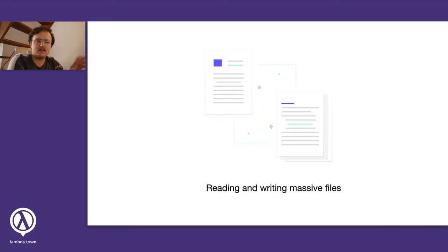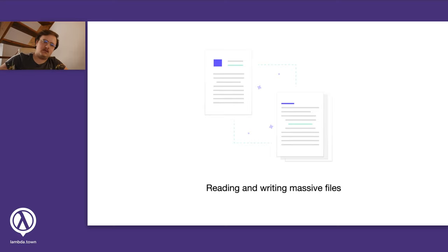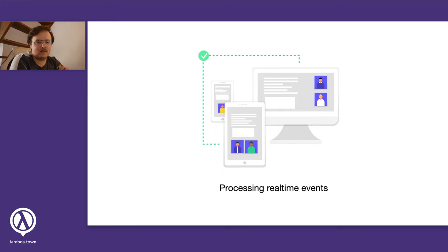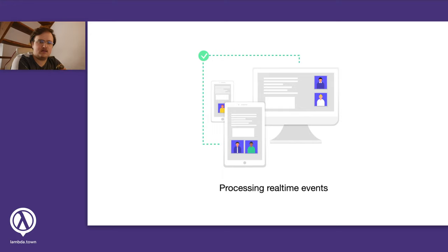Another use case is reading and writing from big data files. Maybe you have a big CSV file or a big JSON file, or you're reading data from some data store and want to write it to a file to upload to an FTP server or a cloud service. The last use case is processing real-time events — maybe you're building a website with real-time communication, a WebSocket connection where your client is sending data to your server in real time, and you want to process and store that data. Again, this is a use case you can implement with streams.